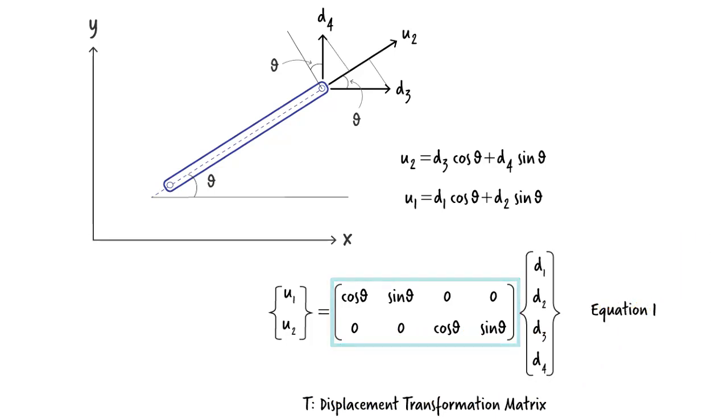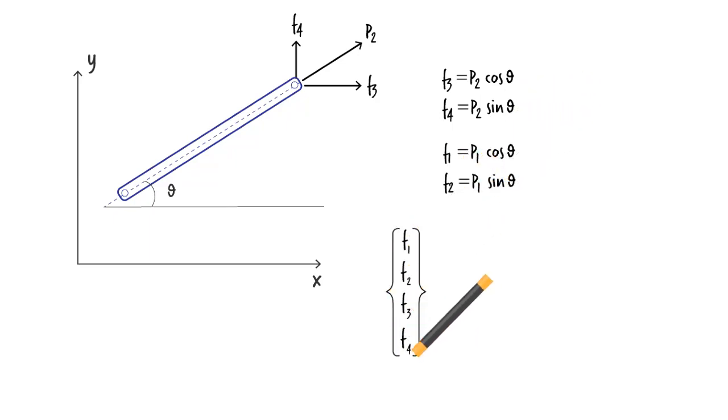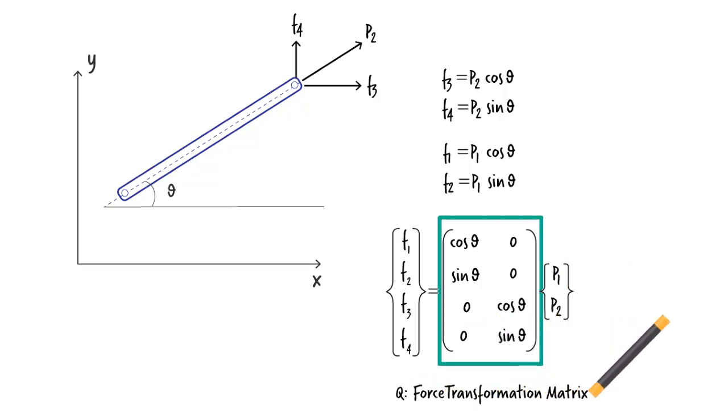We can also come up with a force transformation matrix. Here is the member end force in the local coordinate system, and here are the member end forces in the global coordinate system. What is the relationship between these forces? Since this is an axially loaded member, we know F3 and F4 must be the components of P2. Similar equations can be written for the other end of the member. In matrix form, these equations become. Let's label this matrix Q and call it the force transformation matrix.